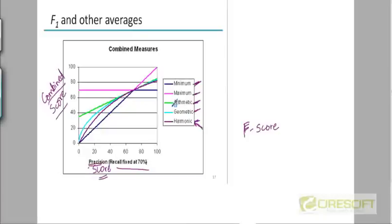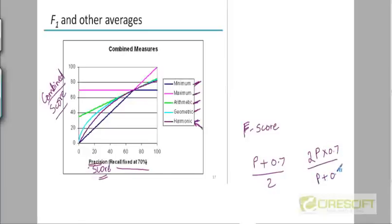The arithmetic mean, as you can see, is a straight line, because the arithmetic mean will be precision plus 0.7 divided by 2. The harmonic mean is this brown curve, which will be 2P times 0.7 divided by P plus 0.7. You can see that for low values of precision, for values close to 0, the harmonic mean is also close to 0, whereas the arithmetic mean still remains pretty high.